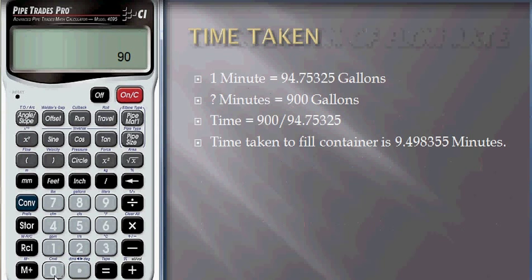This will get the time taken for the pipe to fill the container with 900 gallons capacity: 9.498355 minutes.